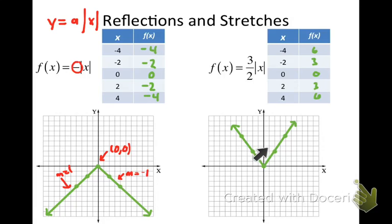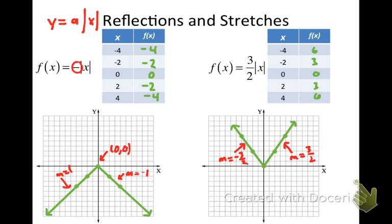The graph has the same V shape, opening upwards since a was positive. The a value of 3 halves corresponds with the slope of the right-hand side — up 3 units, right 2 units. The slope of the left side is the opposite: negative 3 halves, going down 3 and right 2. The vertex is at 0, 0. This is called a stretch — the graph is narrower than y equals the absolute value of x. When a was negative, there was a reflection in the x-axis.